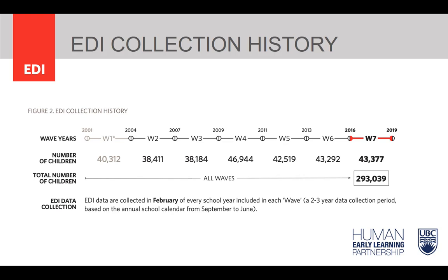As you can see, we have grouped data collection into waves, which encompasses 2 to 3 years. We invite school districts to participate in waves depending on the size of the district. Larger districts typically participate once in a wave, while smaller districts participate every year or 2 out of the 3 years of the wave to ensure that the number of children participating in each neighborhood is large enough to be reliable and attract meaningful change over time. Today, we are reporting on the Wave 7 data, and this year is the first year of data collection for Wave 8.